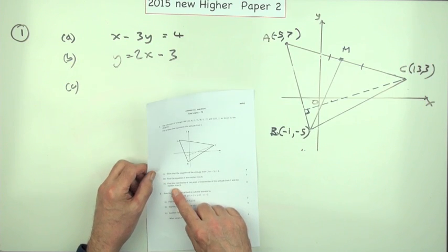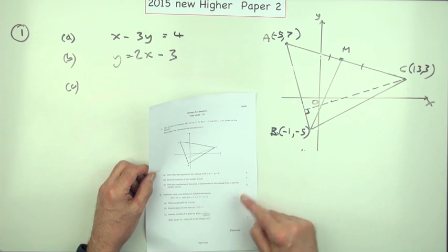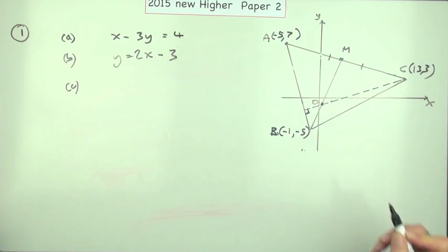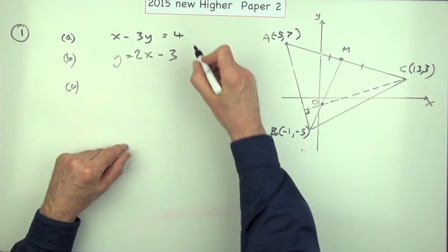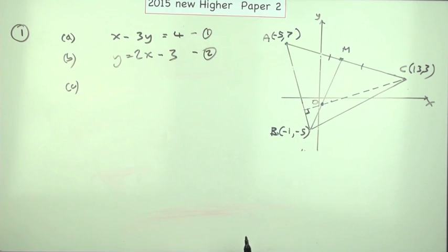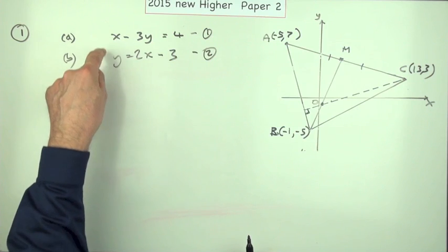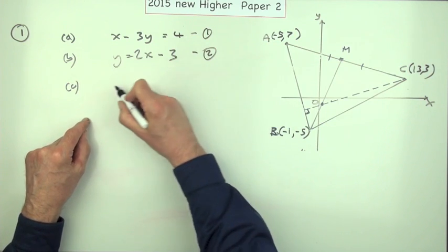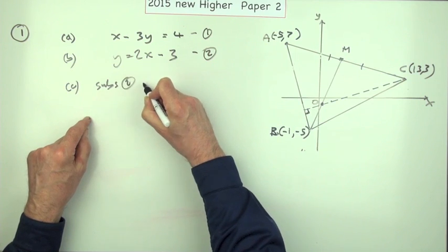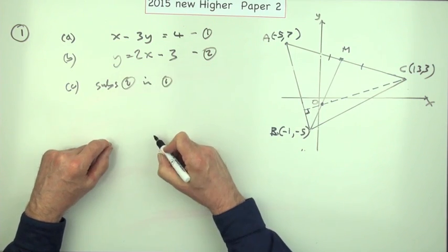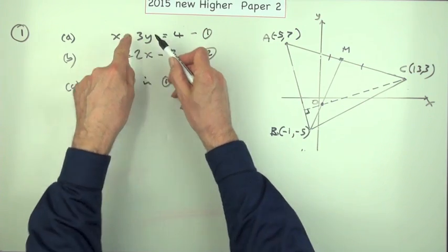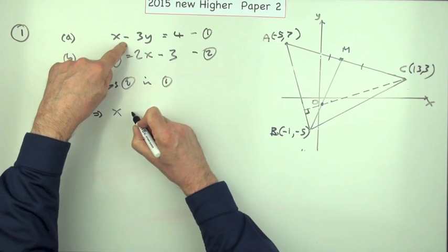And part C: what's the coordinates of the point of intersection of the altitude from C and the median from B? What's this point here? Well, it'll be the intersection of the lines, so that'll be simultaneous equations, whichever way you care to do it. So you get a choice of - well, in this form here I would use substitution since this starts y equals. So that's what I'm going to do. I'm going to say substitute equation 2 in equation 1. So wherever you see a y in number one, equation two substitutes in for it. So it reads x minus 3y, now the substitution 2x minus 3 equals 4.